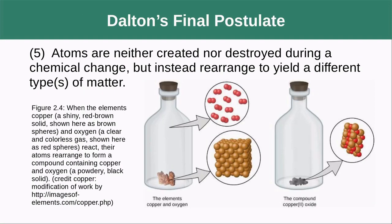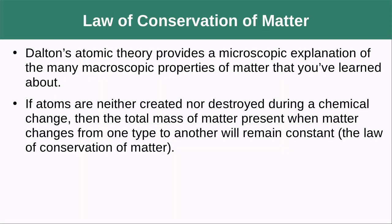The fifth postulate is that atoms are neither created nor destroyed during a chemical change, but instead only rearrange to make different compounds. Dalton's theory led to a very important conclusion called the law of conservation of matter. If the atoms are neither created nor destroyed during a chemical change, then the total mass of matter present should remain the same. We should have the same mass of products as we had the initial reactants.